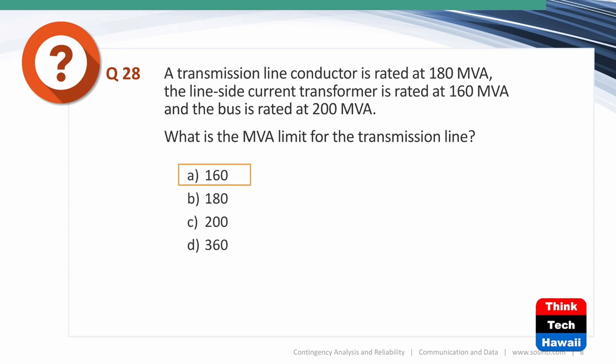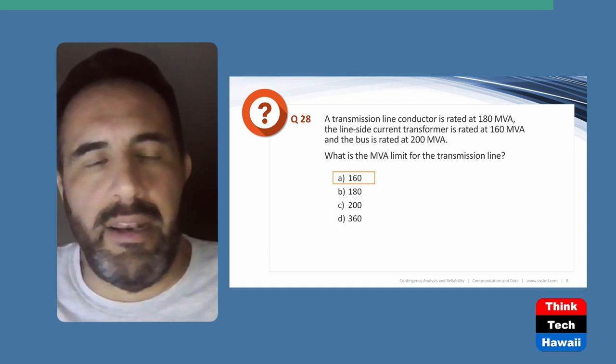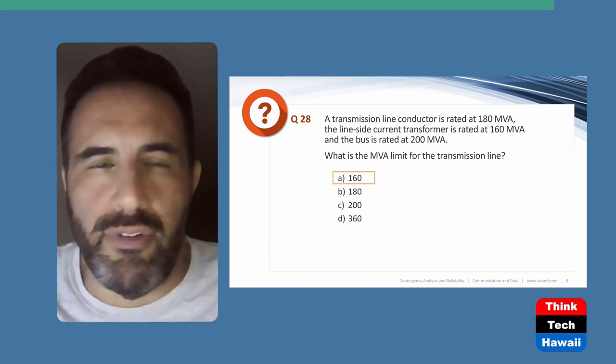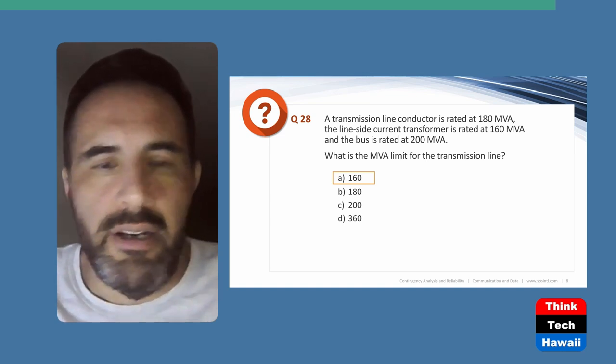Final question: A transmission line conductor is rated at 180 MVA. The line-side current transformer is rated at 160 MVA. The bus is rated at 200 MVA. What is the MVA limit of the transmission line? The answer is 160 — the weakest link — the lowest-rated element in that set of components is the line-side current transformer.